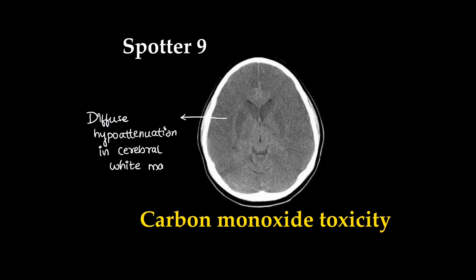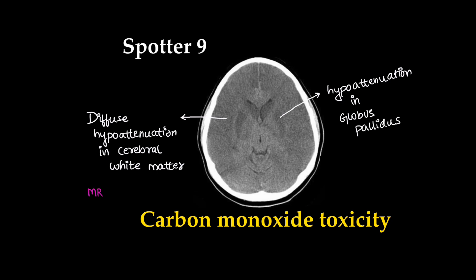This was a case of carbon monoxide poisoning. There is diffuse hypo-attenuation in the cerebral white matter. Hypo-attenuation in the globus pallidus is pathognomonic for carbon monoxide toxicity. MRI for further evaluation can be done.